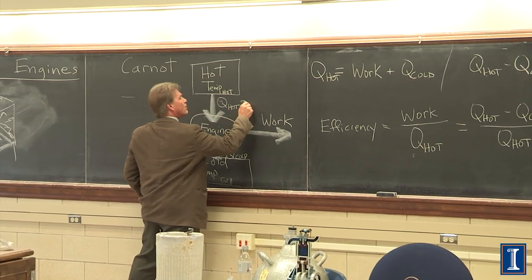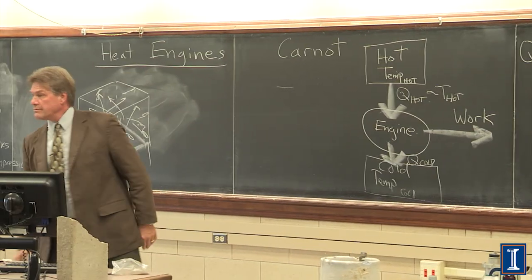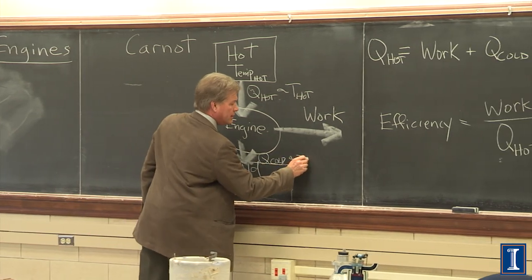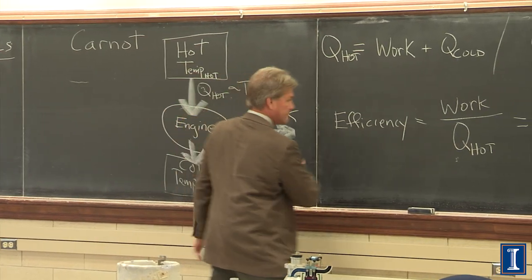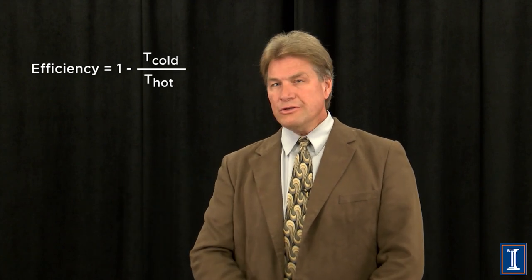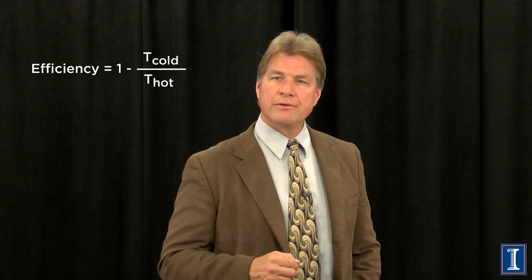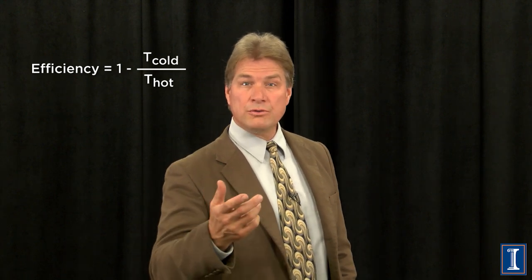We've been talking about heat, but usually we talk about temperature — what is the temperature of the hot substance, what's the temperature of the cold substance? Fortunately, the heat transferred is proportional to the temperature, so the ratio Q-cold over Q-hot equals T-cold over T-hot, because the proportionality constants cancel out. We can now rewrite efficiency as one minus T-cold over T-hot. Looking at that equation, how could we make this 100%? That only happens if T-cold equals zero.